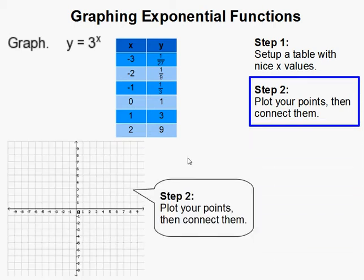Next, you plot your points. Here's my negative 3 for x and 1 over 27, and negative 2, 1 over 9 and so on. Just keep plotting them.